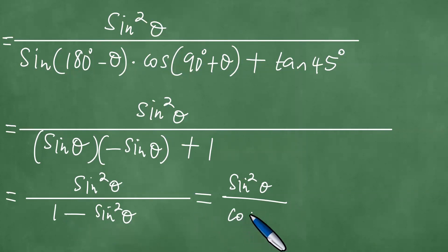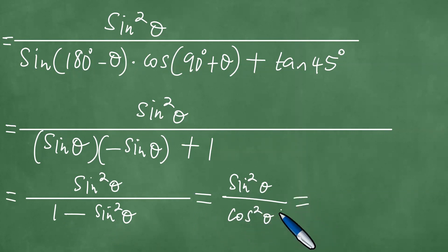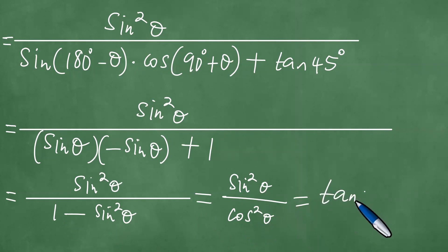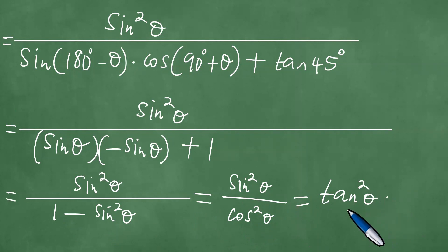The numerator therefore remains as sine squared of theta divided by 1 minus sine squared, which is actually cosine squared. Sine over cosine is a quotient identity, and sine squared over cosine squared is tangent squared of theta. So we're done — tangent squared is a single trigonometric ratio of theta and there's nothing further to simplify.